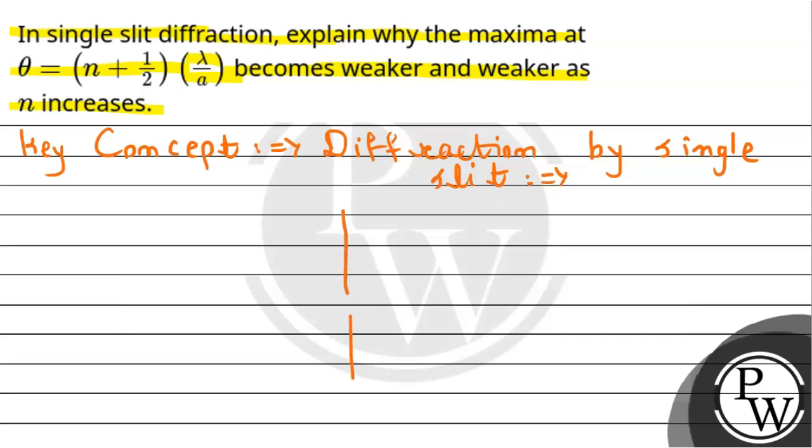Let's suppose there is a single slit in this manner, this is the screen. Screen to slit distance will be capital D. Now we passed rays from here, so this will be the central maxima point where we get a bright fringe. And from here, suppose the first maxima is here, which is at a distance y from the central maxima at an angle theta. The width of the slit is equal to a.